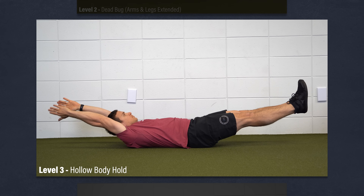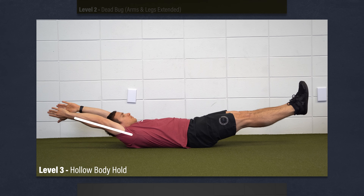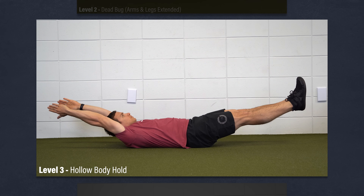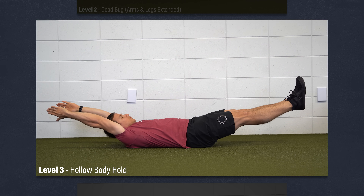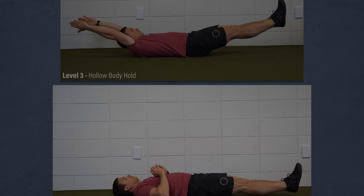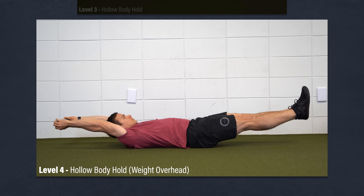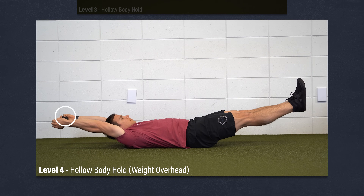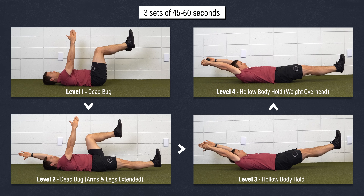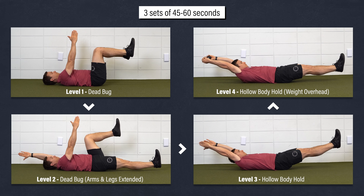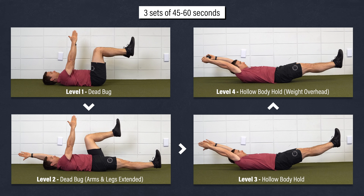Level 3 — Hollow Body Hold: With your arms overhead and legs straight, lift your legs, shoulders, and head off the ground. Keep your low back flat and abs engaged as you imagine yourself forming the shape of a banana. You can bring your arms and legs closer to midline if this is too difficult. Level 4 — Hollow Body Hold with Weight Overhead: Progressively add weight to make it more challenging. Aim for three sets of 45 to 60 seconds as you work through each exercise.